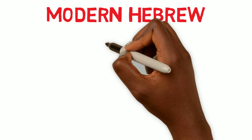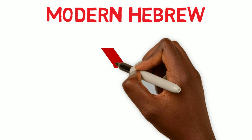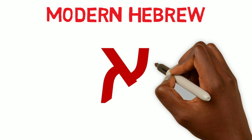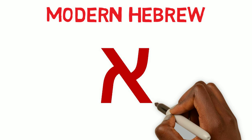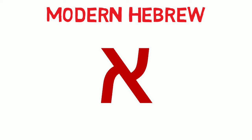Now we're going to take a look at the Modern Hebrew — how you would see Aleph written in Modern Hebrew today. It is a diagonal straight line with a curved line going up on the right and a curved line going down on the left.